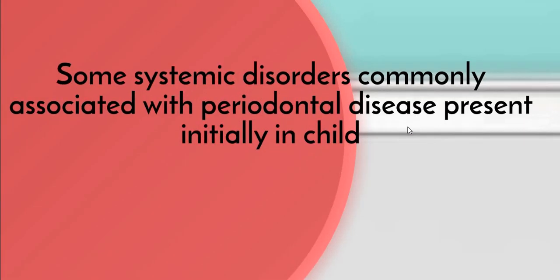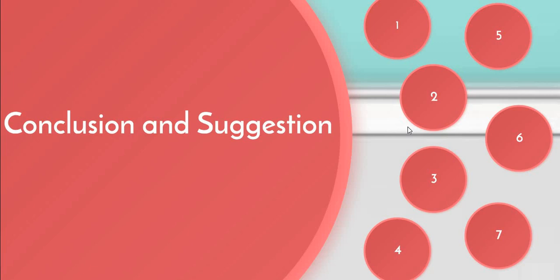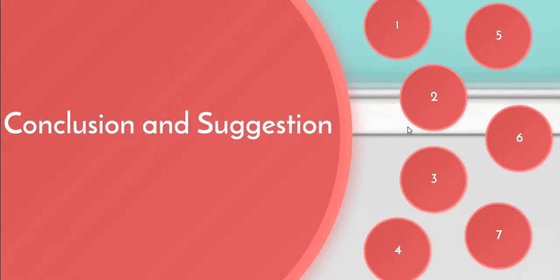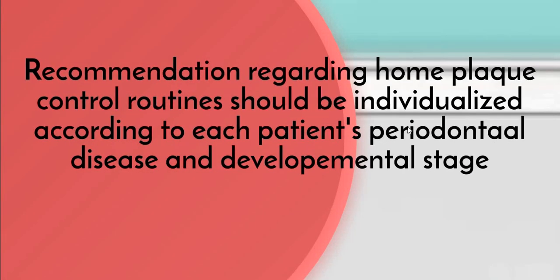Some systemic disorders commonly associated with periodontal disease present initially in children, like leukemia and Down syndrome. Clinicians should be aware of children's special needs and conditions. Recommendations regarding home plaque control routines should be individualized for each patient according to the periodontal disease and the developmental stage.